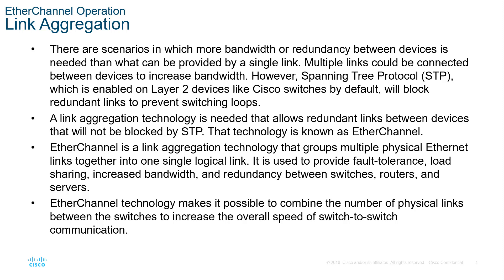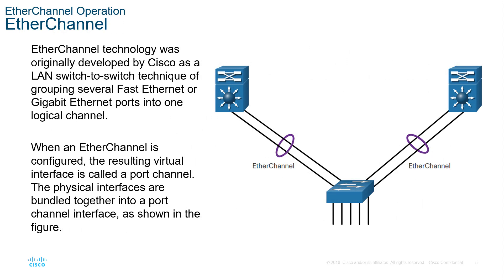The link aggregation technology is needed for those redundant links without STP putting them in a blocking state. EtherChannel technology will make it possible to combine the number of physical links between the switches to increase the overall switch communication speed. Here we have two links — you'll notice a circle around them, which denotes EtherChannel. We can have multiple links depending on the switch. These are going to be called Port Channels — a virtual interface that we denote as a Port Channel, with multiple physical links in that Port Channel group.